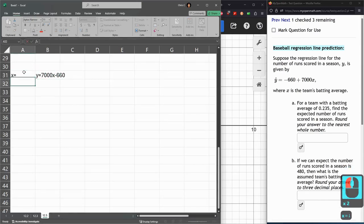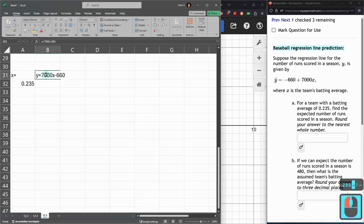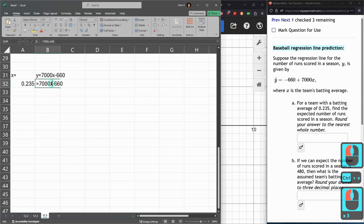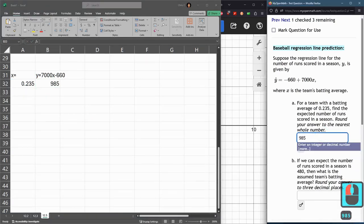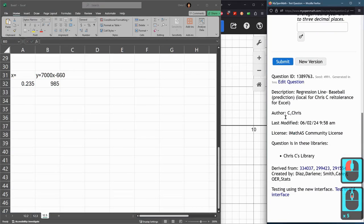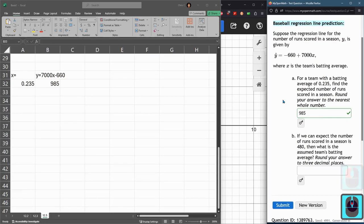The first one is going to be x. I want 0.235 for x. Now I can copy from the equal sign and paste. And again, go in, delete x times that value. So 985. Okay, so we have that.